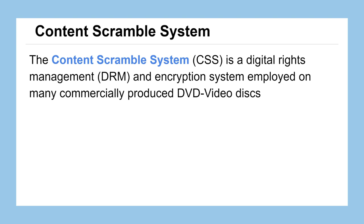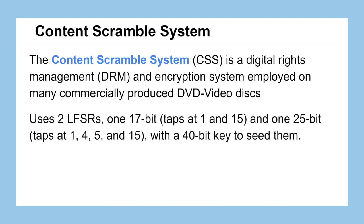DVD nowadays is less popular, but every disc that was made had the content scramble system implemented on it. The way it worked was it used two LFSRs, one was a 17-bit system with taps at 1 and 15, and the second LFSR was a 25-bit one with four different taps.